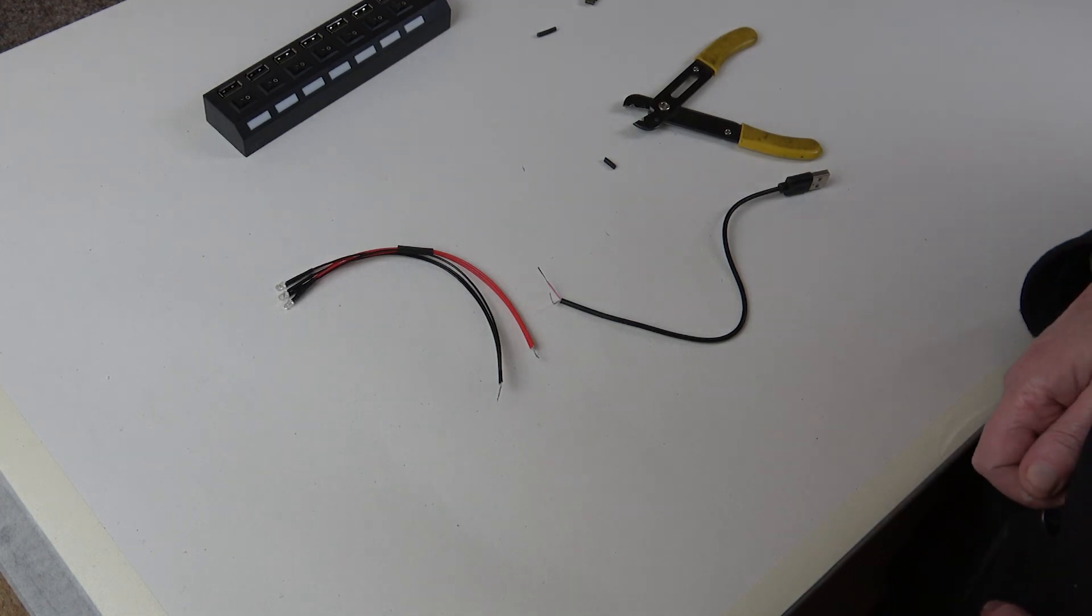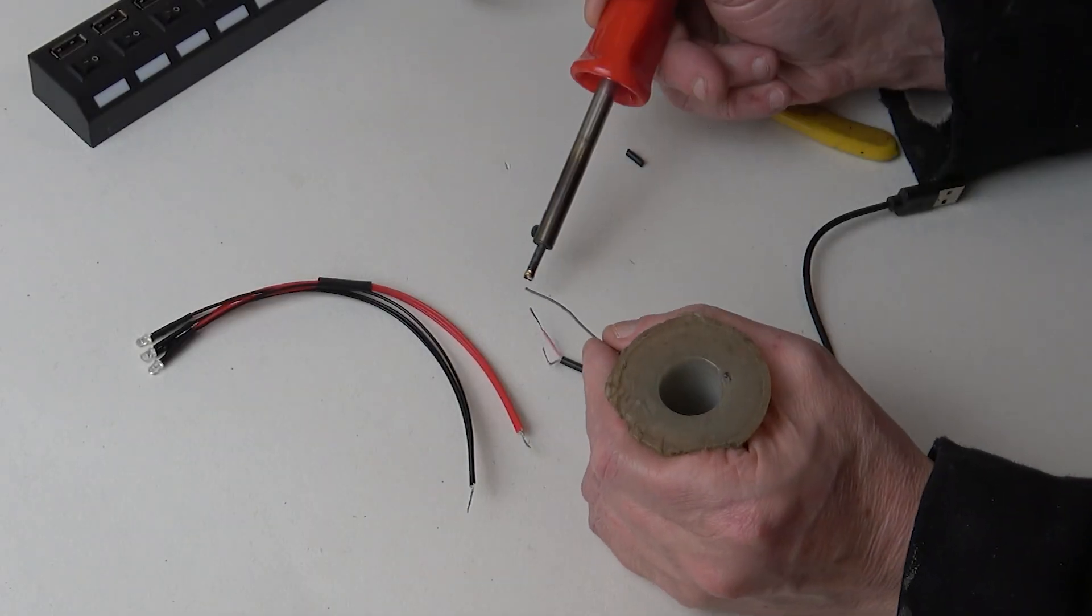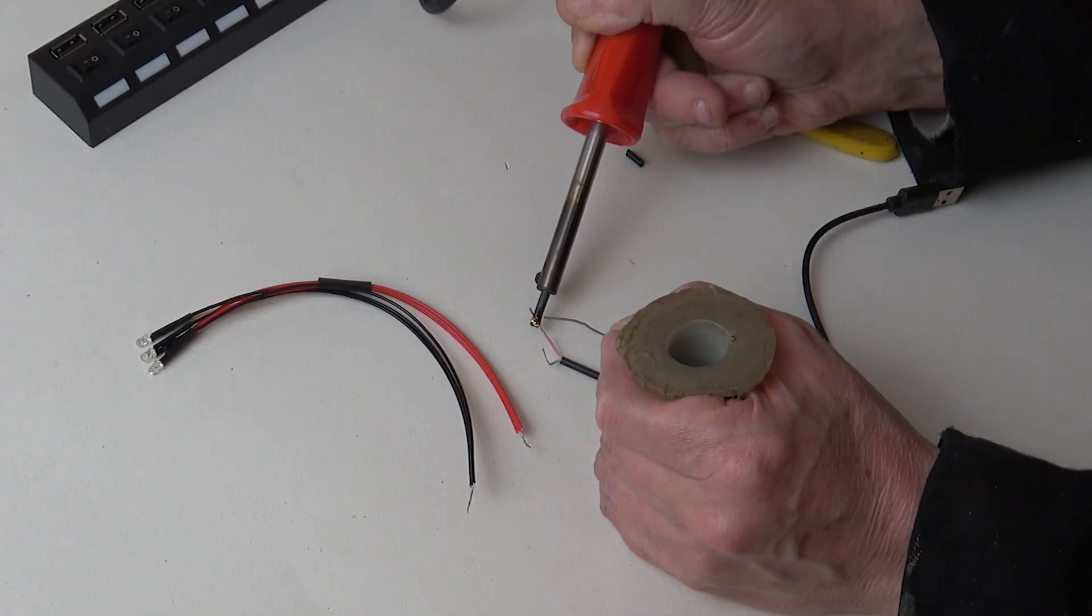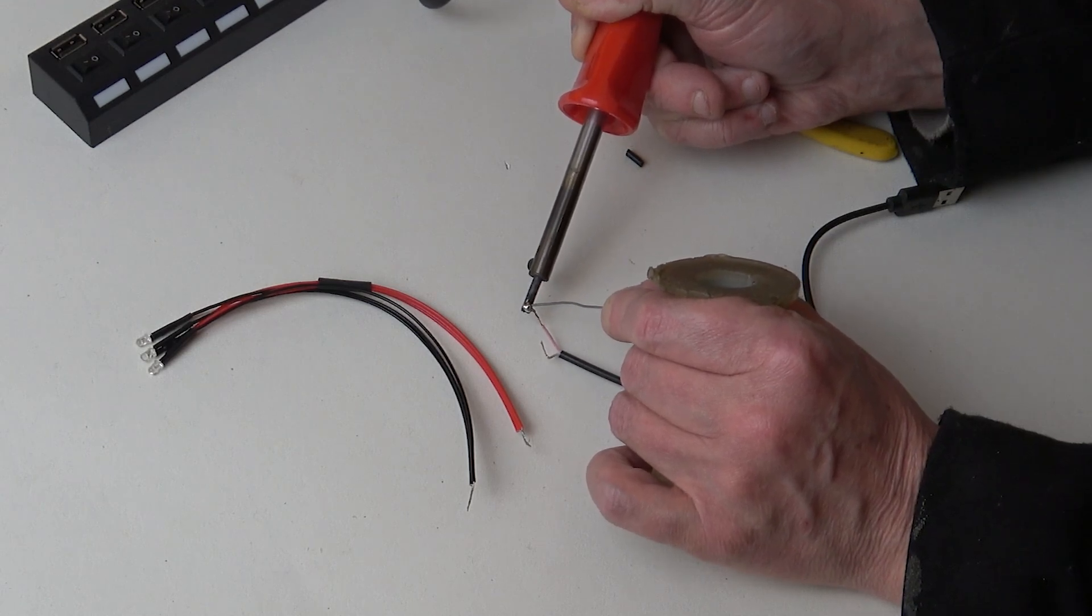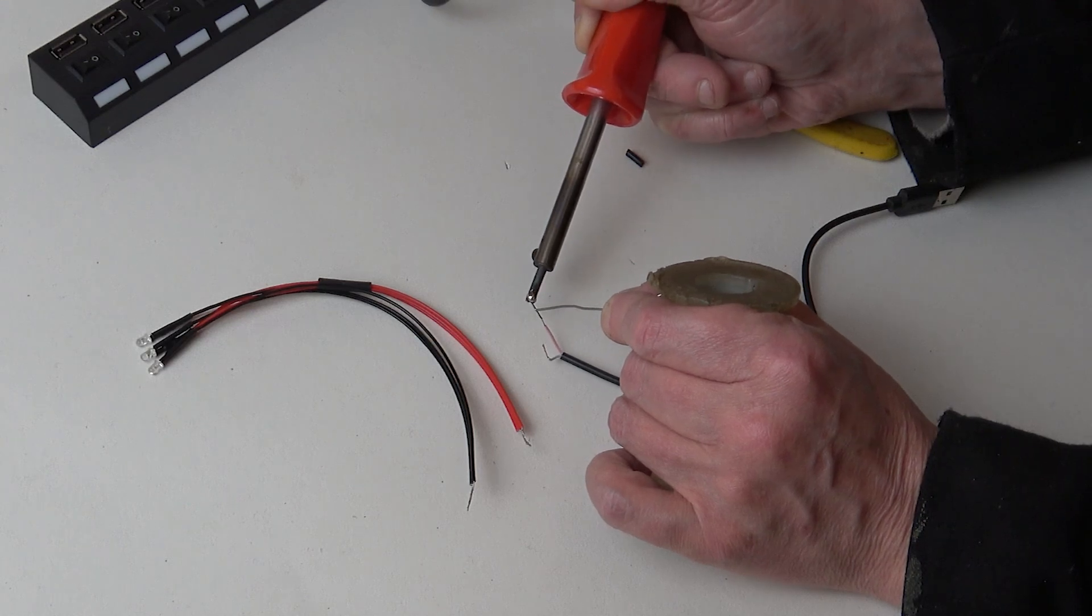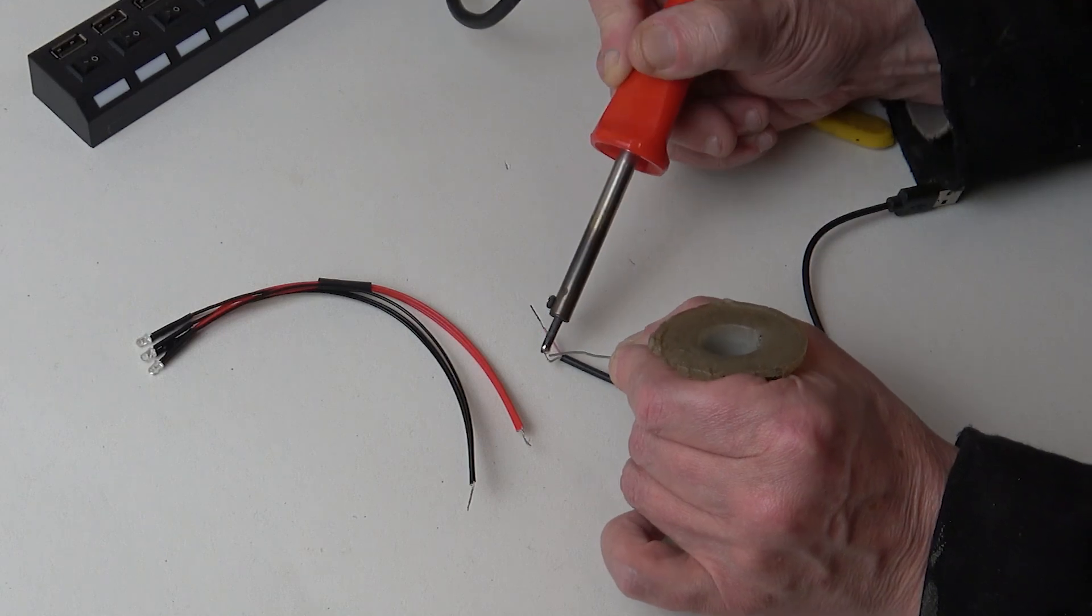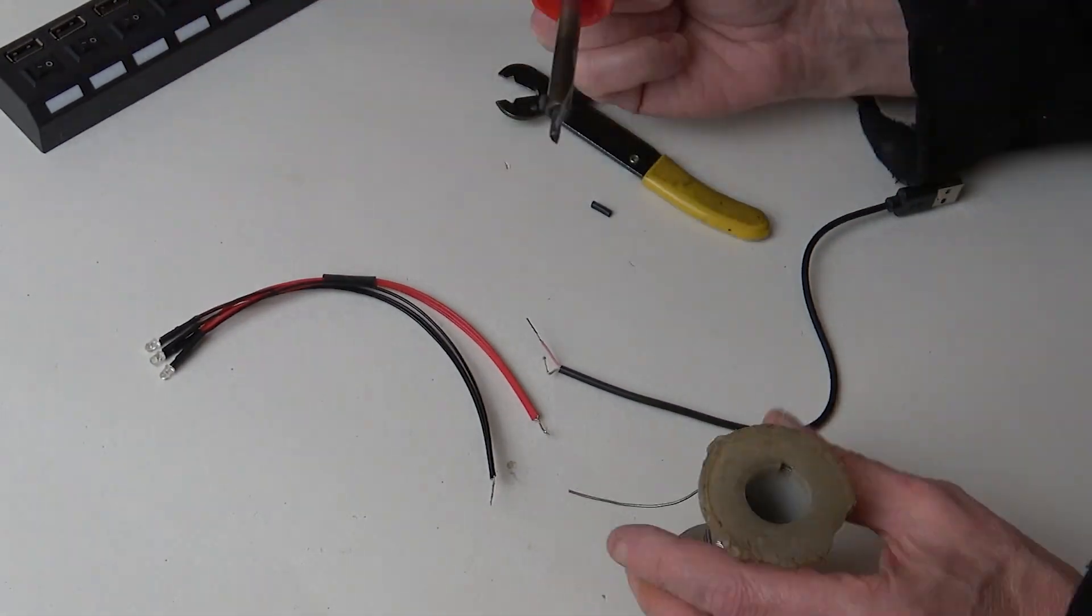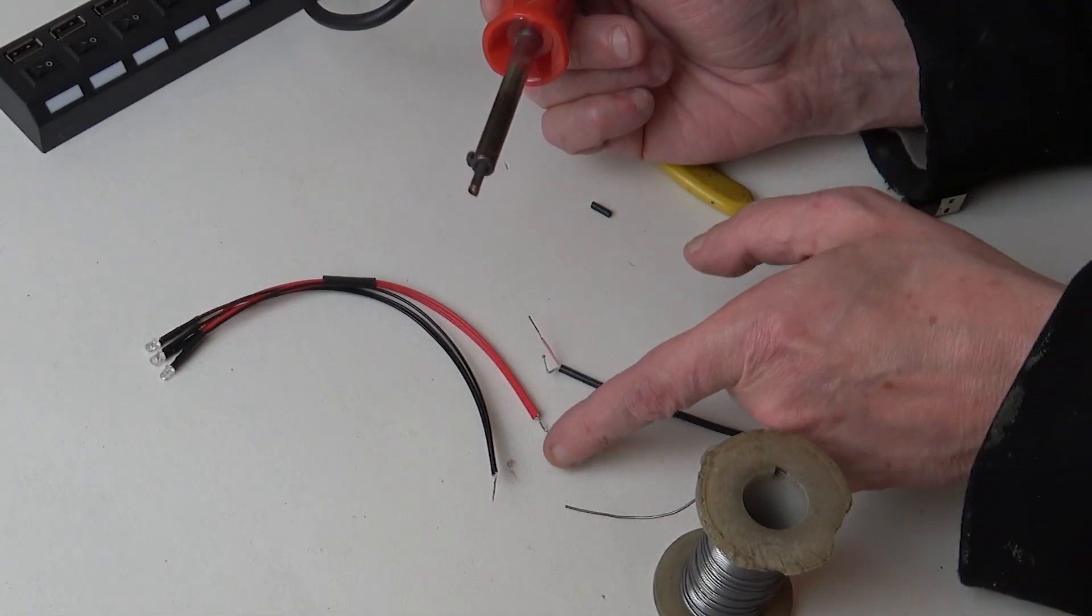So I'm just going to tin these wires, as they say, which is just coat a little bit of solder along each wire. And it's just a case of joining this one to this one and this one to this one.